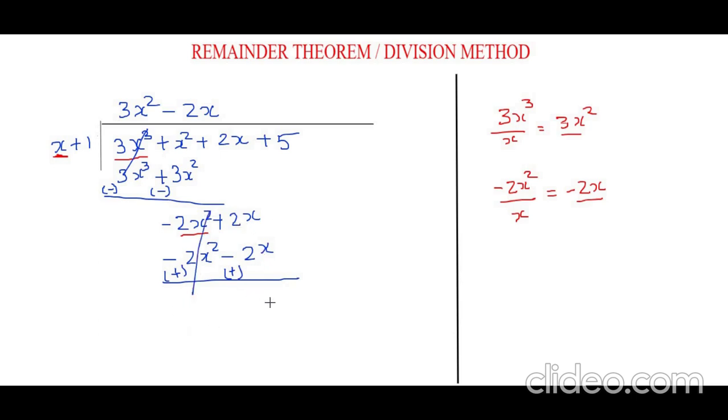So 2x plus 2x would be 4x. Then this plus 5 will be brought down. And now again the same method: we're going to divide x with 4x, so 4x by x, which would be 4. Now I'm going to write that 4 in the quotient, so it's plus 4.